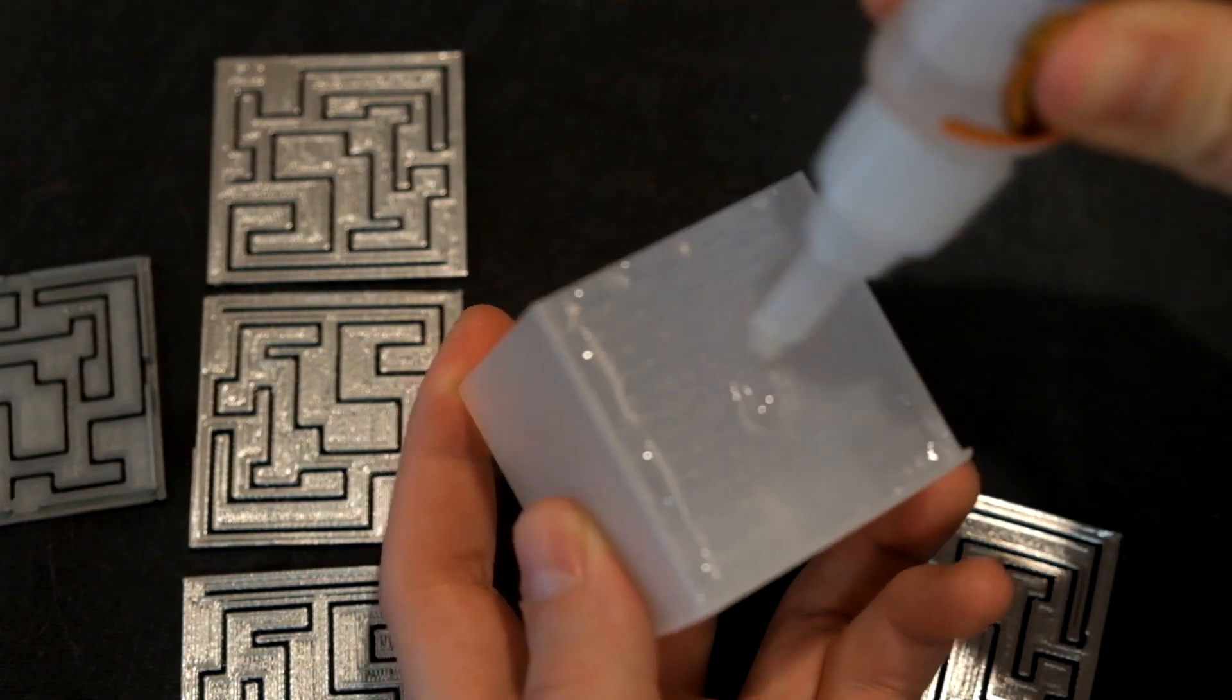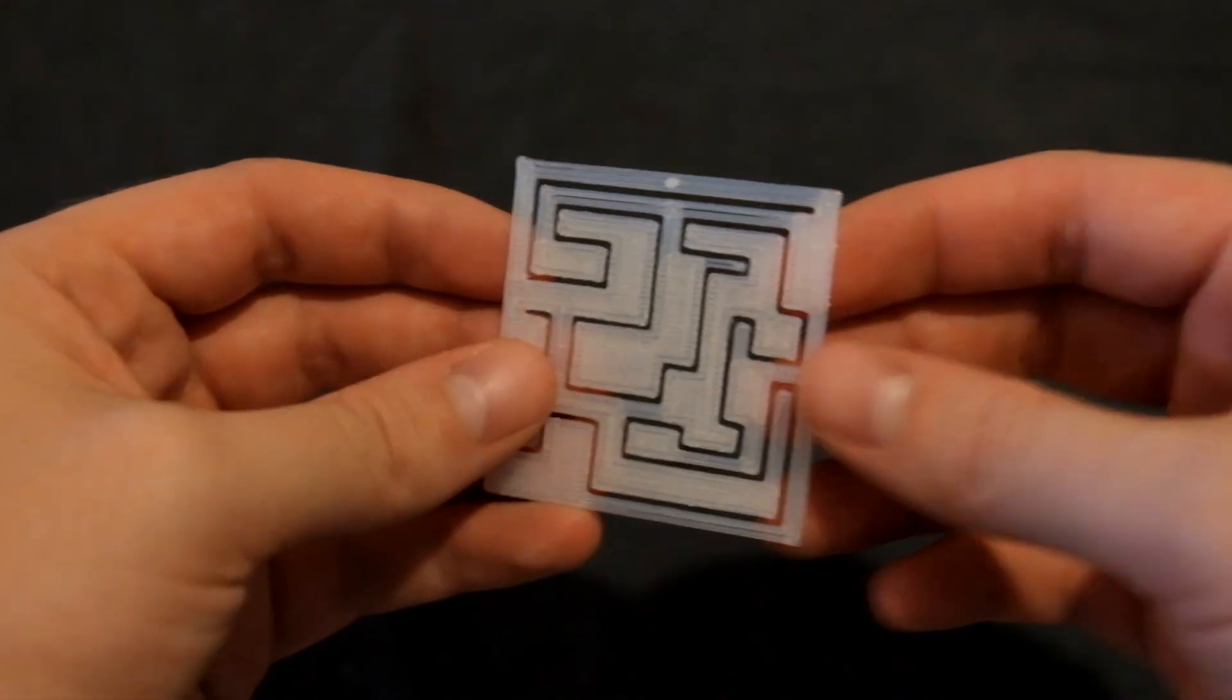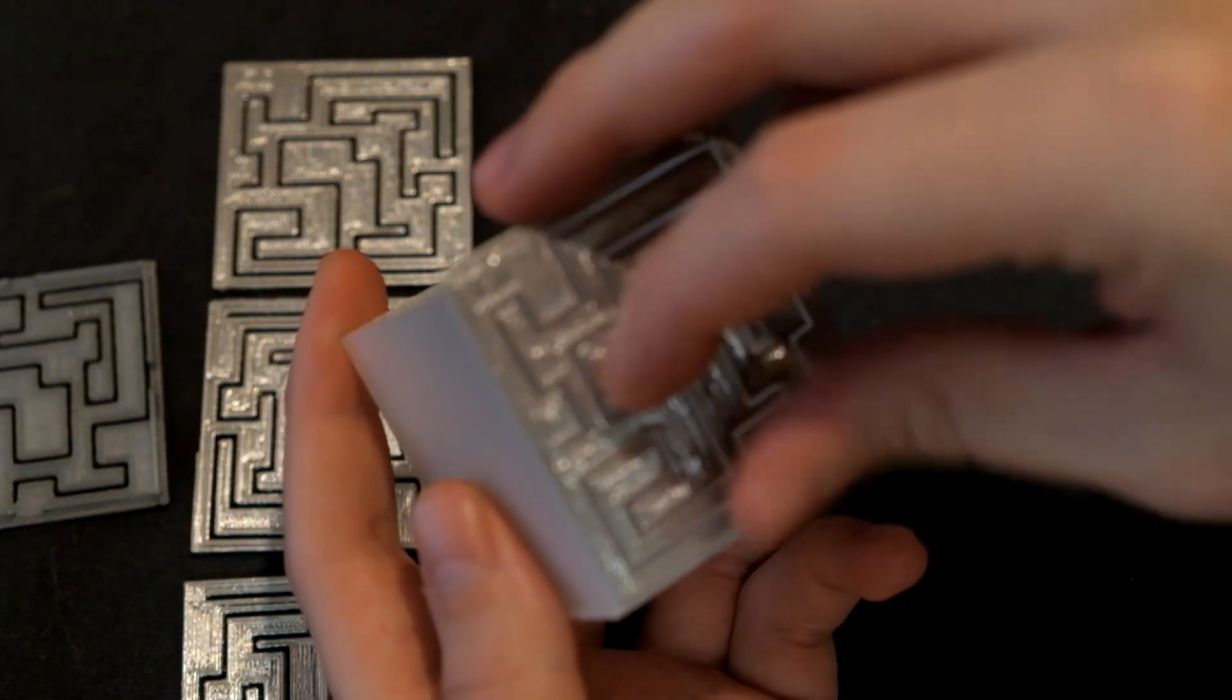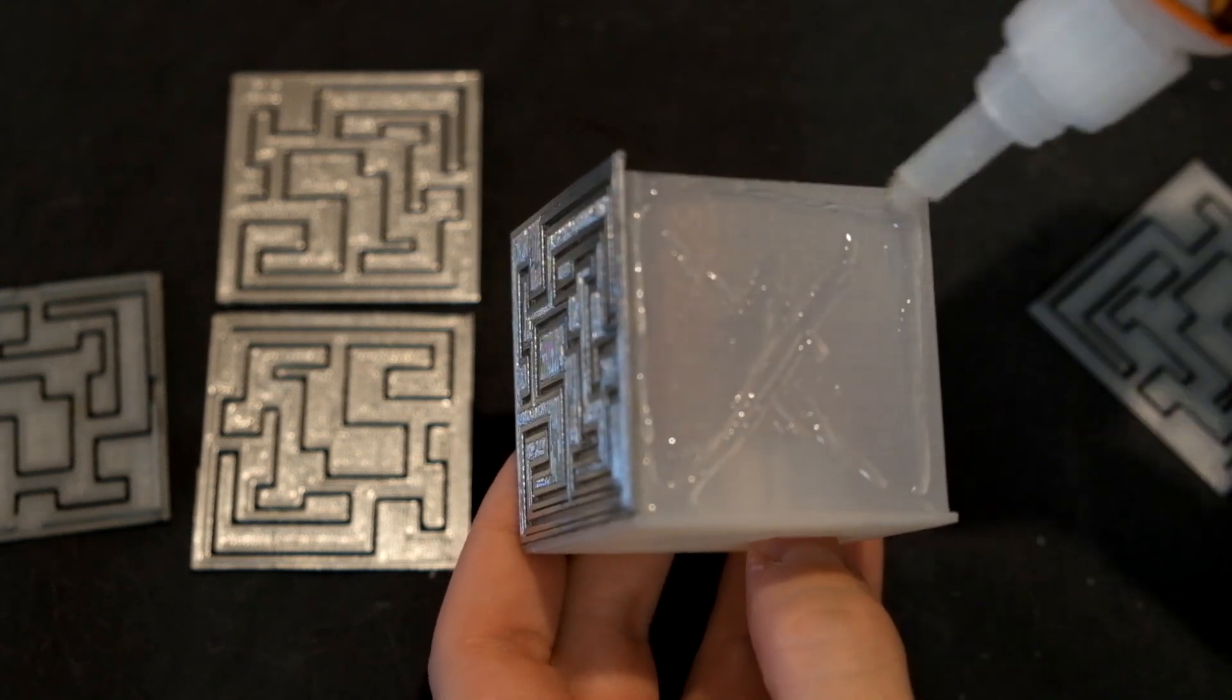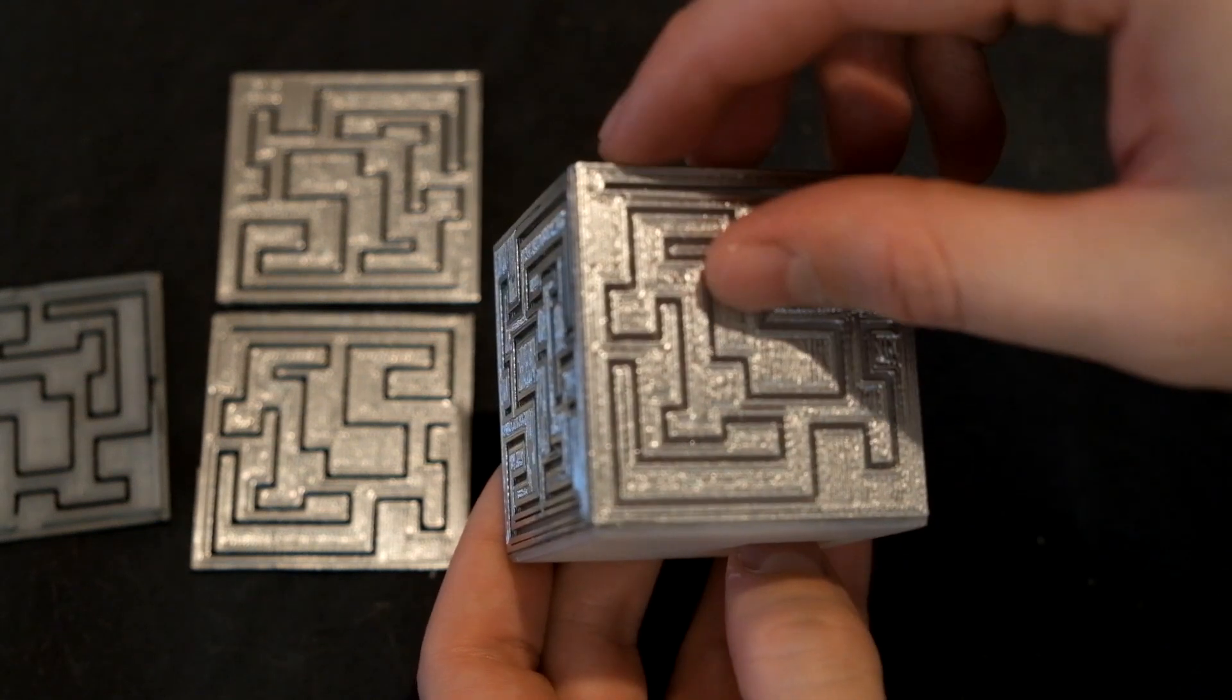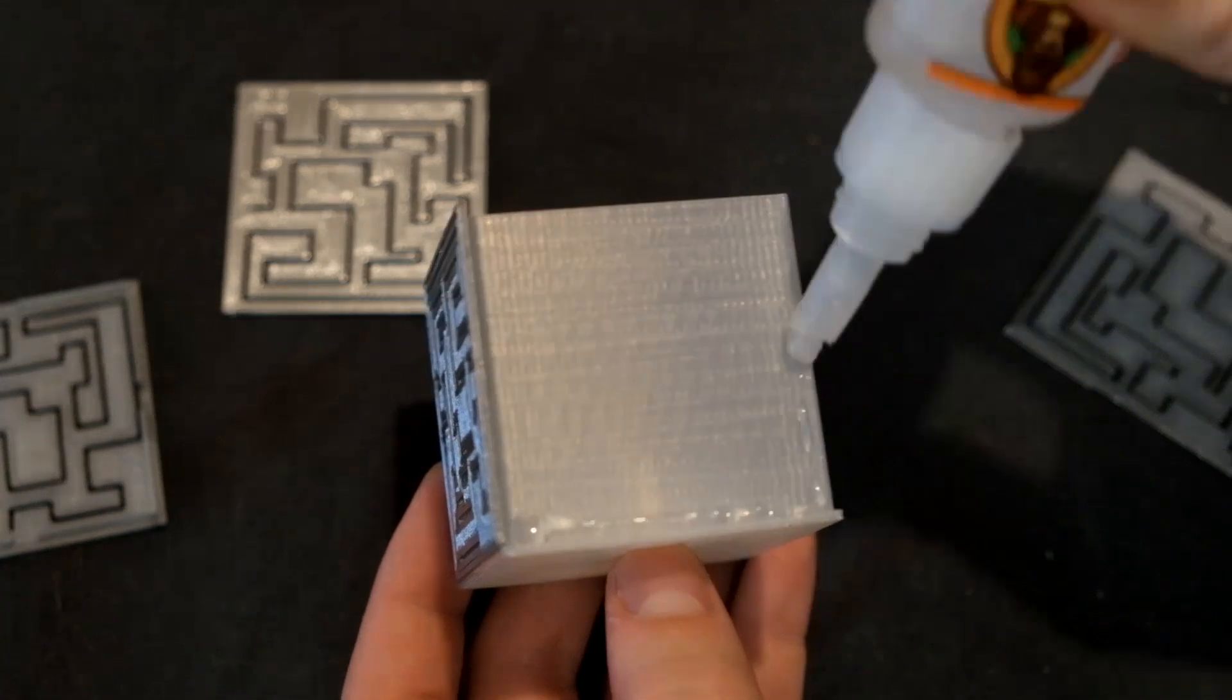Each of the side panels has a small dot that goes at the top and faces inward to help align each of the side panels so they don't overlap. I then repeated this for the remaining sides.